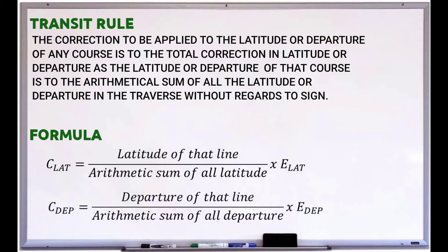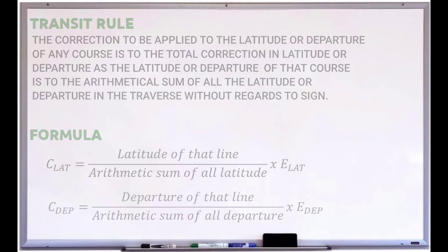For departure: the correction of departure of any line is equal to the departure of that line over the arithmetic sum of all departures, times the error in departure.